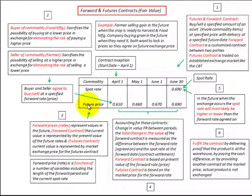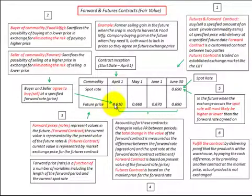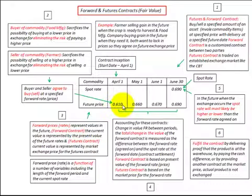Here I'll go through an example of a commodities futures contract. This is a contract that's traded on a market exchange like the Chicago Board of Trade. First I'll explain how this contract works, then I'll show how to calculate its fair value to determine any gains or losses on the contract, and then finally show how to record this contract on a balance sheet and on the income statement.